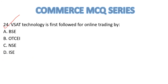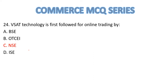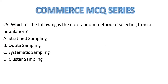Question Number 24: Which technology was first followed for online trading? Option C is your correct answer.